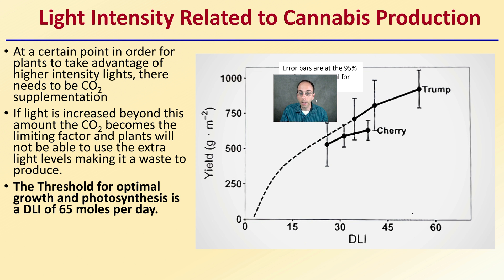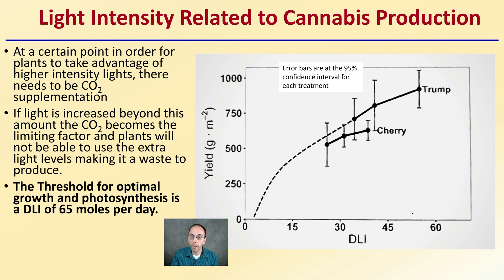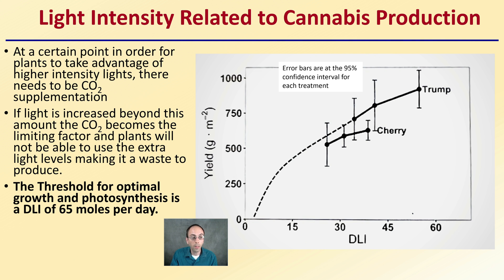How does light intensity relate to cannabis production? At a certain point, in order for plants to take advantage of higher light intensities, there needs to be CO2 supplementation. If light is increased beyond that amount, CO2 becomes a limiting factor and plants will not be able to use the extra light — making it a waste, especially indoors where you're paying for the light. The threshold for optimum growth and photosynthesis is a DLI of 65 moles per day.